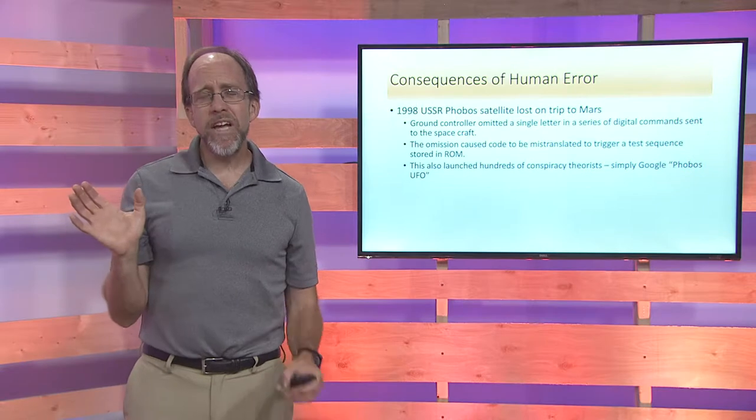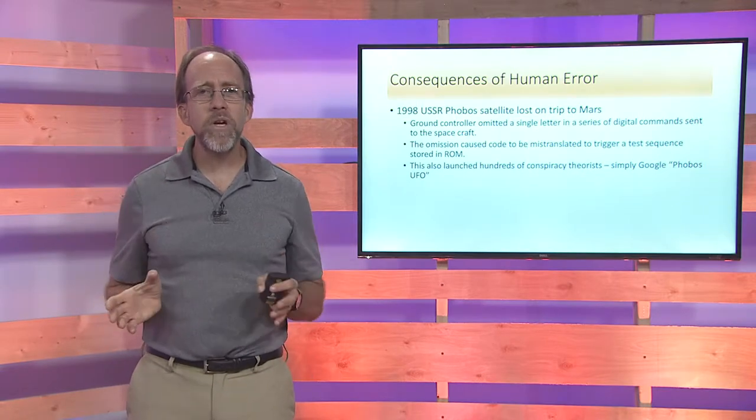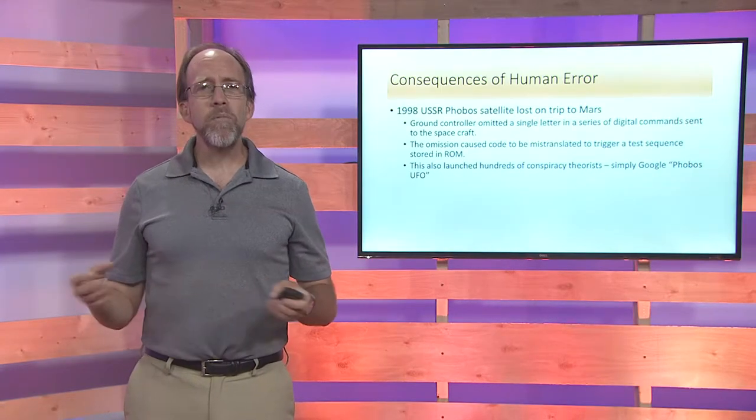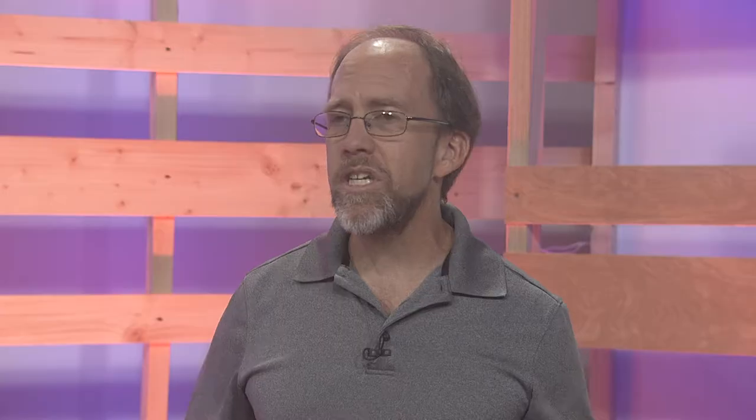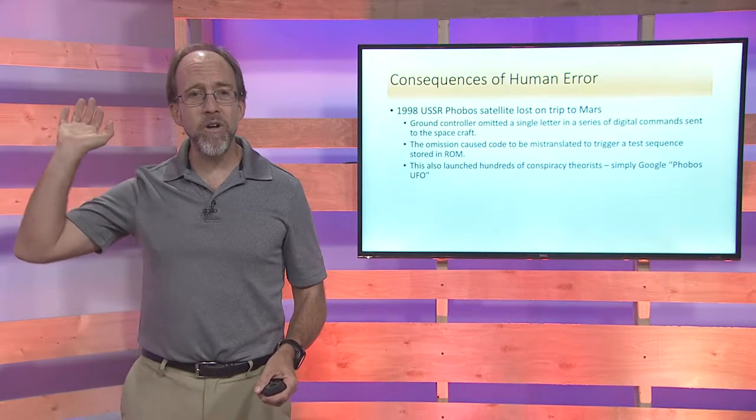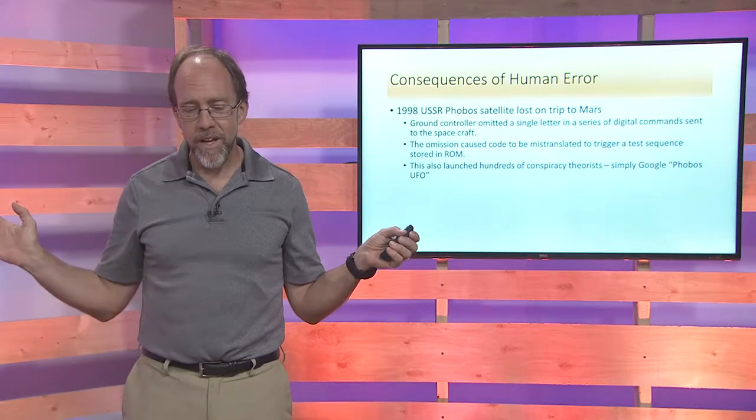First, let's look at a case scenario of the consequences of just simple human error. In 1998, Russia was sending a Phobos satellite to the Phobos moon of Mars. Very expensive satellite. It takes a lot of effort to get something off to Mars. The satellite is up there taking incredible pictures of the moon of Phobos and Mars. And then, all of a sudden, it just goes haywire and spins out of control and disappears. And that's the end of the mission.